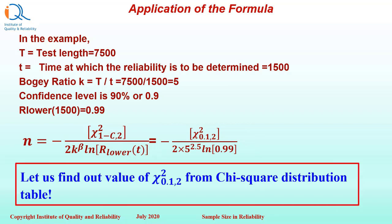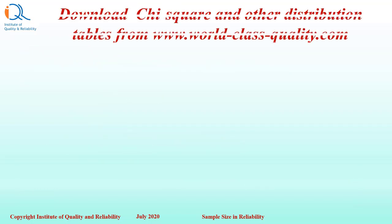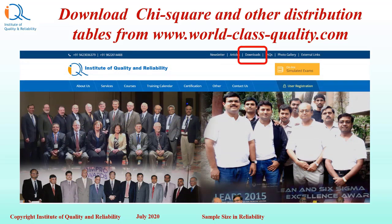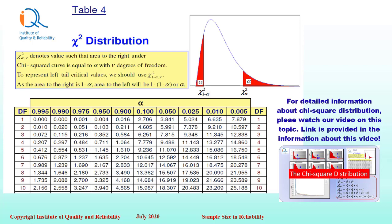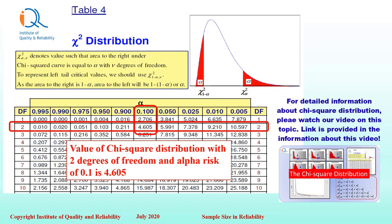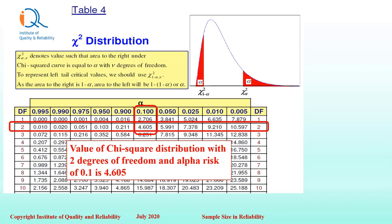Let us find the value of Chi-square distribution from the tables. You can download the Chi-square distribution and other distribution tables from our website www.world-class-quality.com in the downloads section. The Chi-square distribution table is shown here. For 2 degrees of freedom and alpha equal to 0.1, that is 90% confidence level, the value of Chi-square distribution is 4.605.